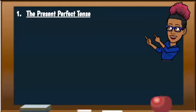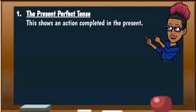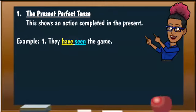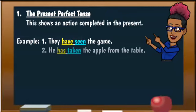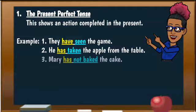The present perfect tense. This shows an action completed in the present. Examples: they have seen the game; he has taken the apple from the table; and Mary has not baked the cake.